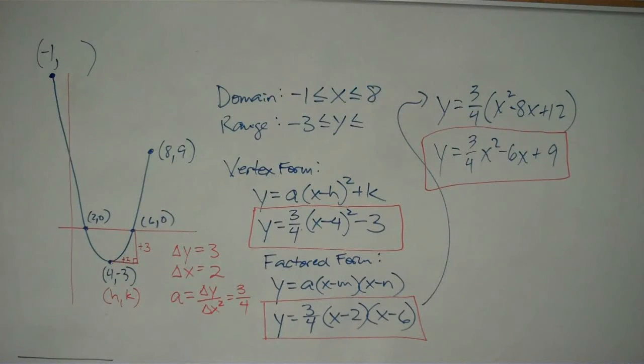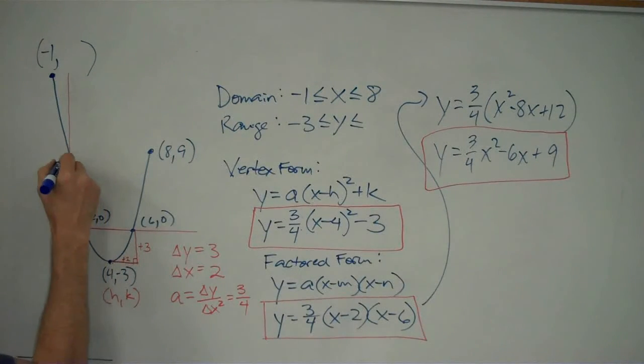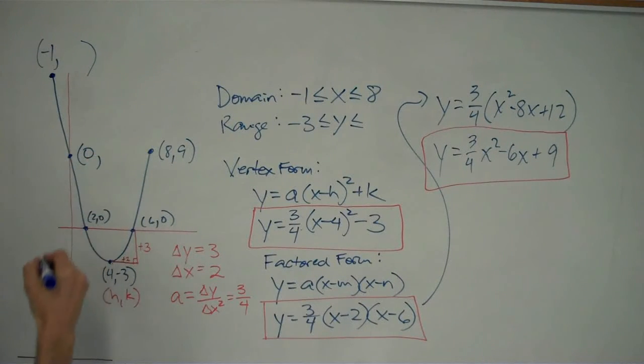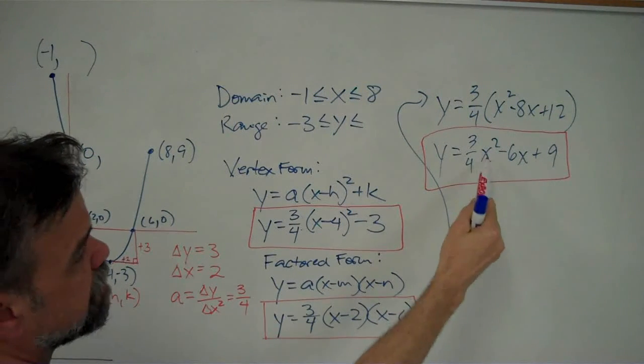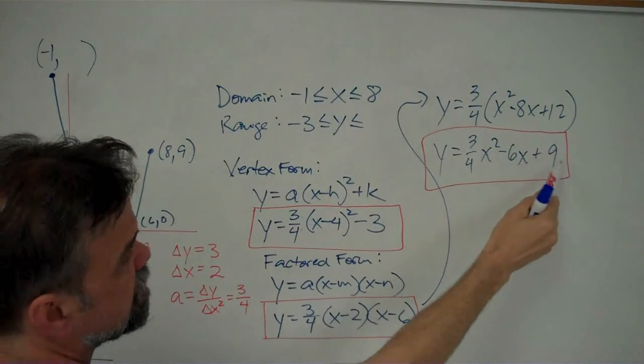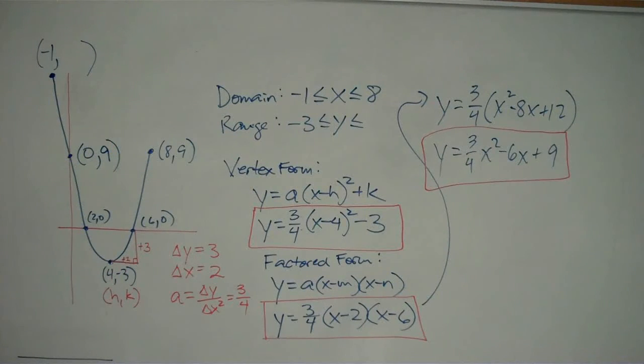Now, the nice thing about standard form is it gets you the y-intercept very quickly. Because your y-intercept is merely the point where x equals 0. So if I plug 0 in here, I get 3 fourths times 0, which is 0, minus 6 times 0 is still 0, plus 9.